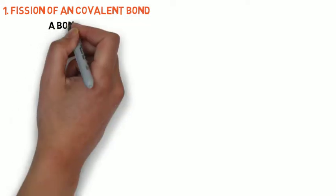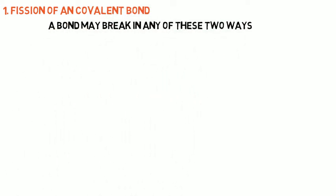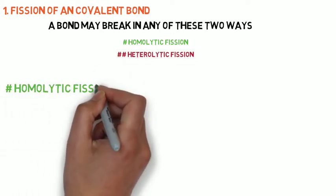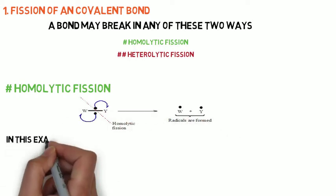Fission of a covalent bond. A bond may break in any of these two ways. The first one is homolytic fission. The other type is heterolytic fission. The homolytic fission is otherwise known as symmetrical fission.